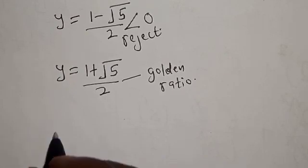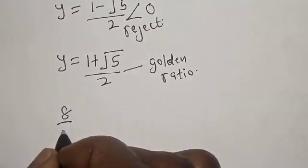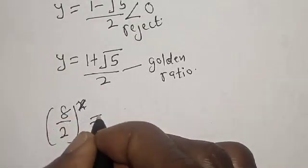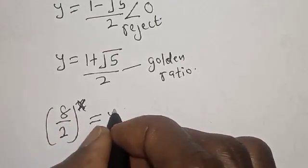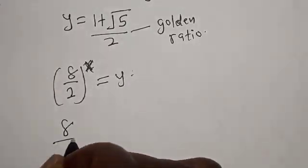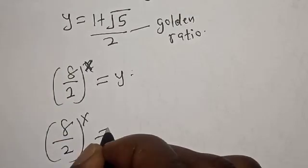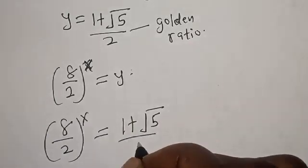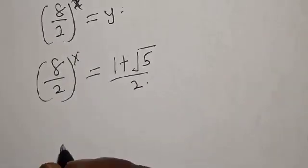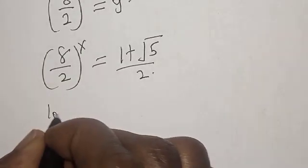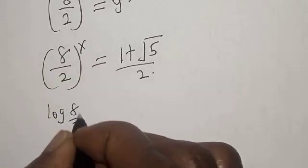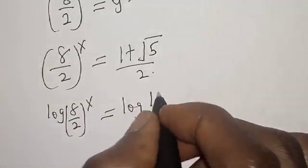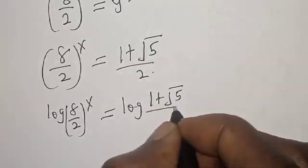Now remember that (8 over 2) raised to power s equals y. So (8 over 2) raised to power s equals (1 plus square root of 5) over 2. Let's take the log of both sides: log of (8 over 2) raised to power s equals log of (1 plus square root of 5) over 2.